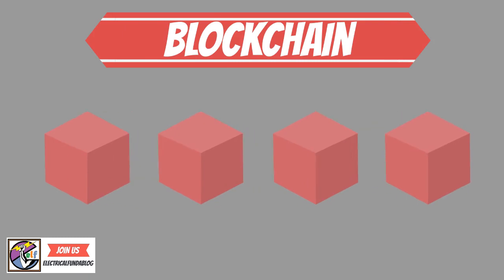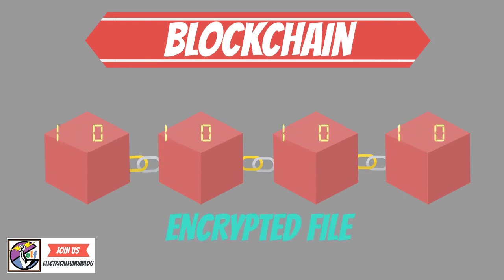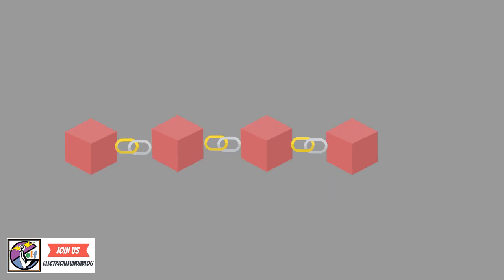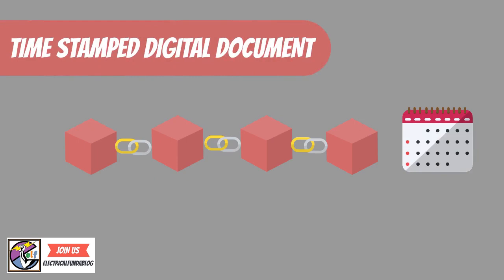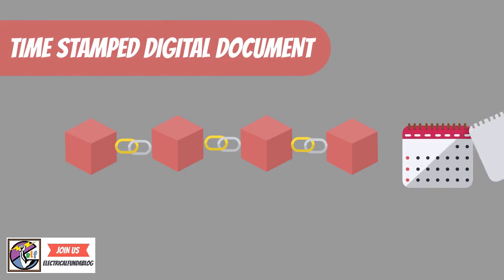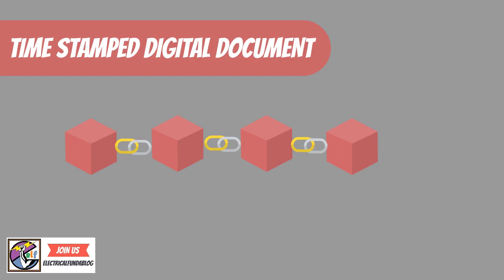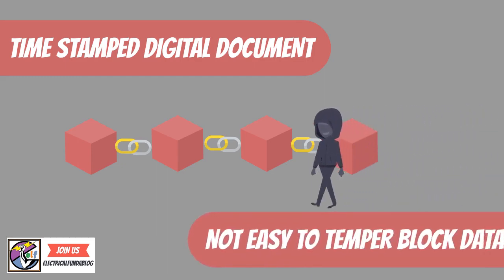As the name suggests, it is a chain of blocks. In simple words, a block is a file which has all information in encrypted form. Blocks are linked with each other in a distributed ledger. Blockchain technology is intended to timestamp digital documents so that it's not possible to backdate them. Once the information is recorded into blocks, it is very difficult to tamper with them.